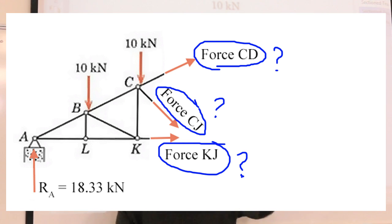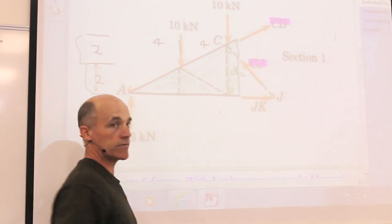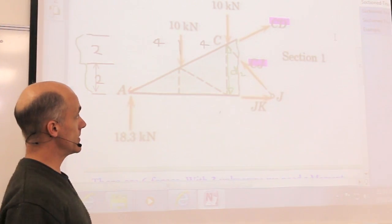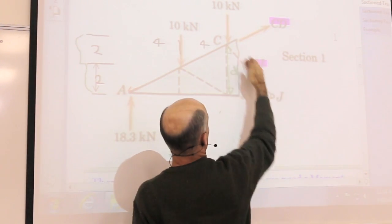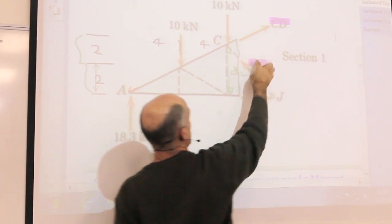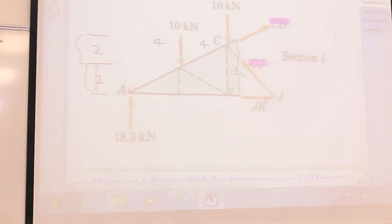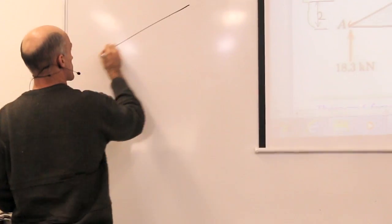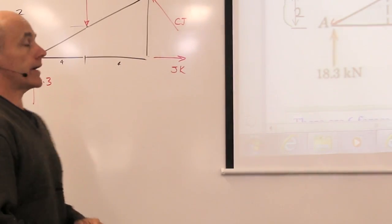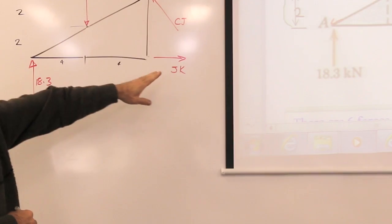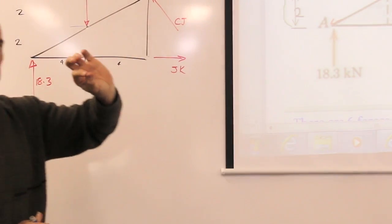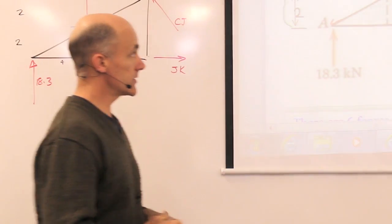Three of them are unknown. CD, CJ, and JK. We know the direction of those forces because they're forces within members of the truss. So we know the direction of them, but we don't know the magnitudes. So we are basically doing a non-concurrent force question. Okay, how do we solve a non-concurrent force question? We try to find a point we can take a moment on, which will eliminate two of the forces.